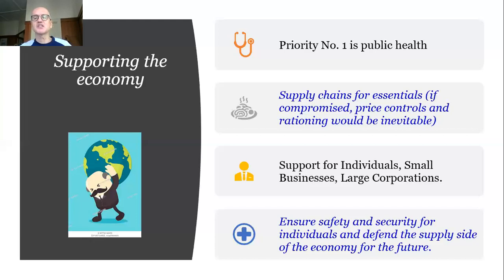Some large corporations, including airlines, are probably going to be and probably should be nationalized. There are all sorts of other things that need to be done — many ways to crack an egg, so we don't need to be overly prescriptive. To support individuals, small businesses, and large corporations, you need to support business organizations, because when we get past this and the economy recovers, there needs to be a supply side to recover into. We need to keep institutions afloat. The emphasis must be on meeting the basic needs and security of all individuals without leaving anybody out.